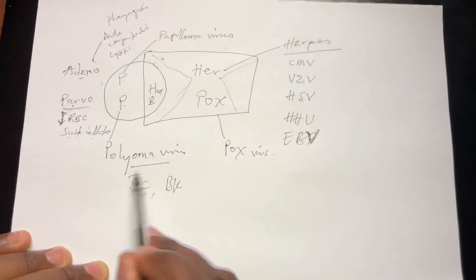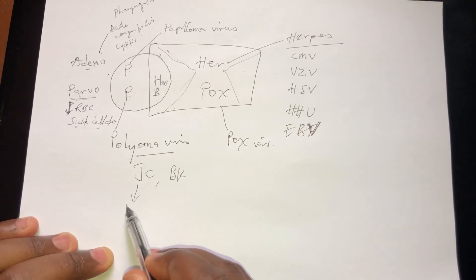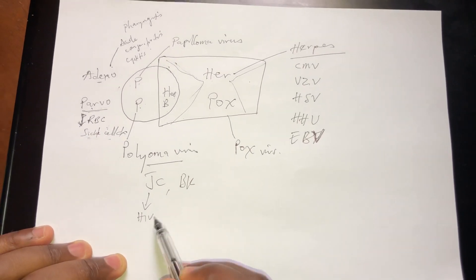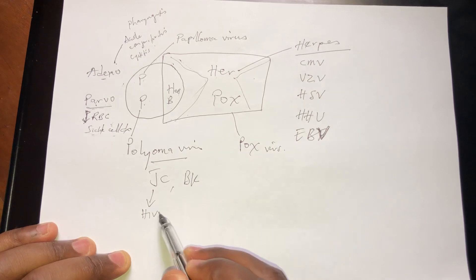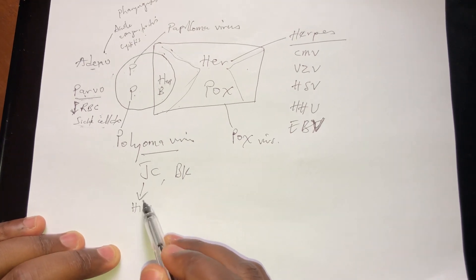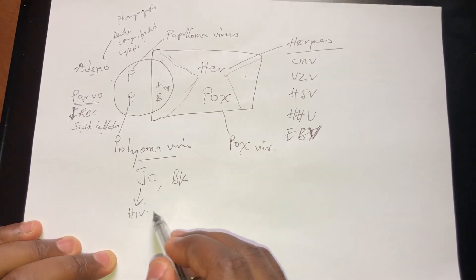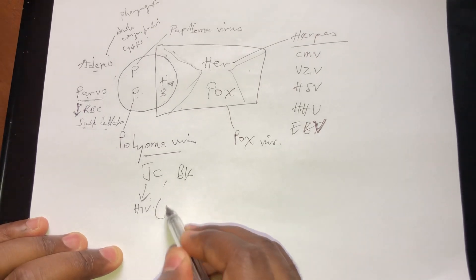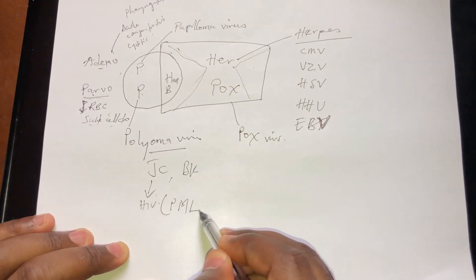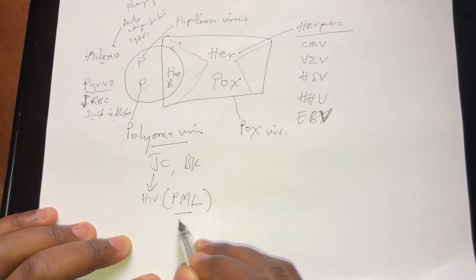We also have the JC virus. The JC virus loves to infect HIV patients. When they have HIV, this JC virus is reactivated in the brain and it can cause progressive multifocal leukoencephalopathy — PML.